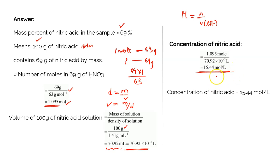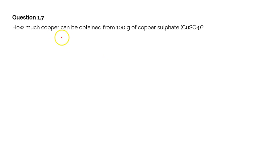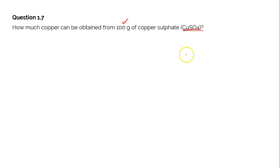I hope you are understanding how to solve it. In case of any doubts, please let me know in the comment section. Let's quickly move on to question number 1.7: How much copper can be obtained from 100 grams of copper sulfate? So from 100 grams of copper sulphate, what will be the mass of copper element that can be obtained?